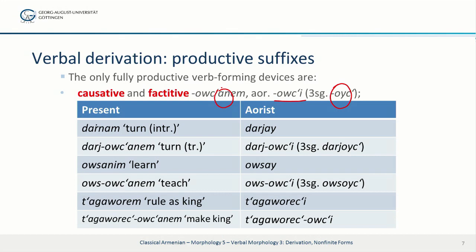The first example is the verb 'to turn' (intransitive), literally 'to turn oneself': darnam 'I turn,' aorist dardzai 'I turned.' So the root is dardz, and to that one forms dardzoutzanem 'turn (transitive), I turn something,' aorist dardzoutzi 'I turned something.' Next: usanim 'I learn,' aorist usai — the root is us — and we form usutsanem 'I teach,' aorist usutsi 'I taught.' Notice in both cases we have third singulars in -oits: dardzoutzi 'he/she/it turned something' and usuitzi 'he or she taught.'